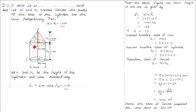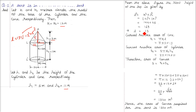To find the curved surface area, we need the slant height. With height 5 and radius 12, the slant height L equals the square root of 12 squared plus 5 squared, which is the square root of 144 plus 25, equals the square root of 169, which is 13. So L is 13.